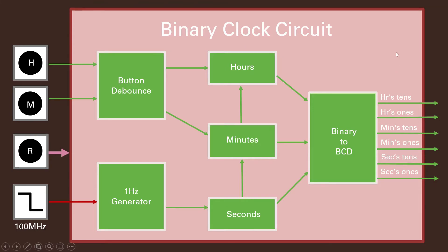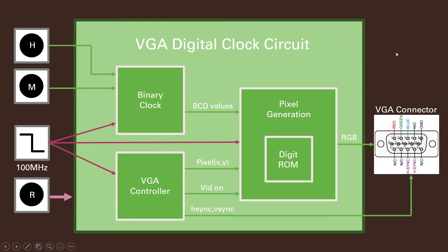Here's the VGA circuit - got the increment hours and increment minutes. Here's the binary clock I just showed you. The 100 megahertz is driving the VGA controller and the pixel generation circuit. We have a system reset, and those BCD values are going into pixel generation. From the VGA controller we have pixel X and Y and the video-on signal. I'll instantiate the digit ROM - I just took the ASCII ROM and cut out all the characters I don't need, leaving in numbers 0 through 9 and the colon, which happens to be next in the ASCII list at 3A right after 39. That drives the RGB values to the VGA connector, along with H-sync and V-sync.